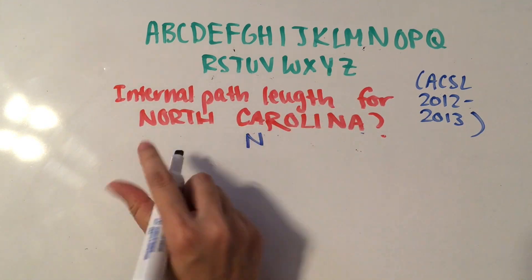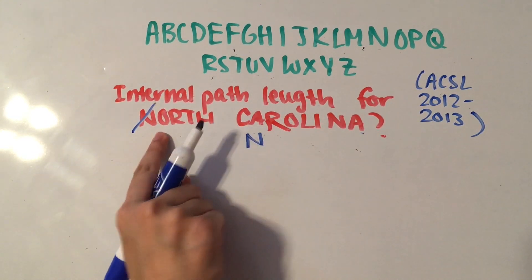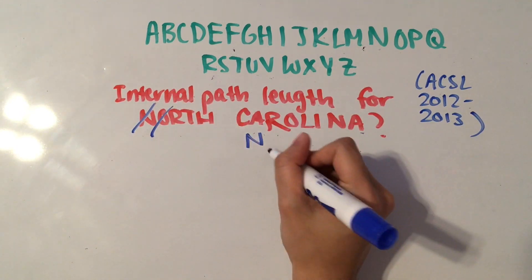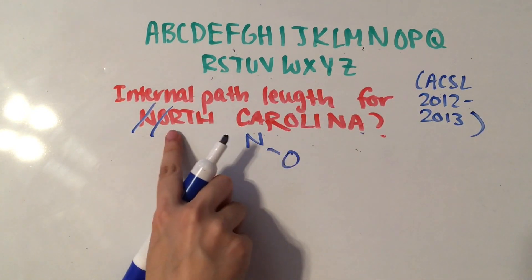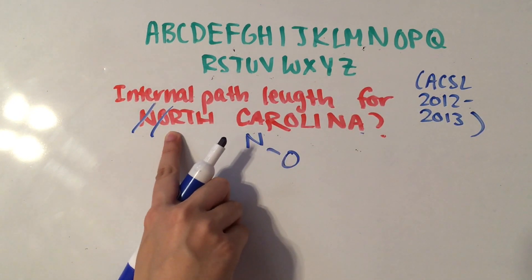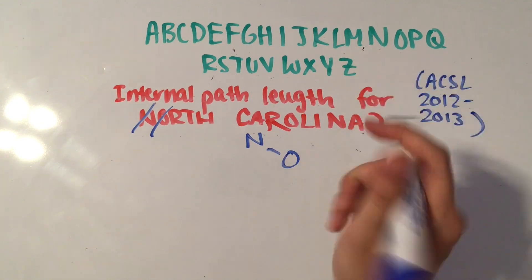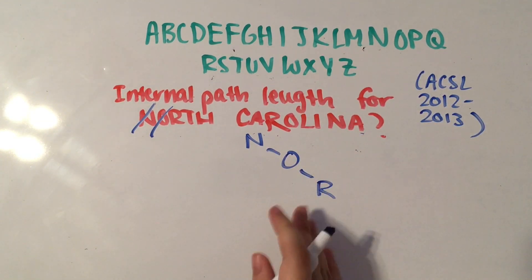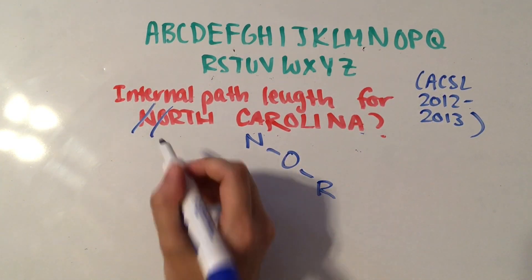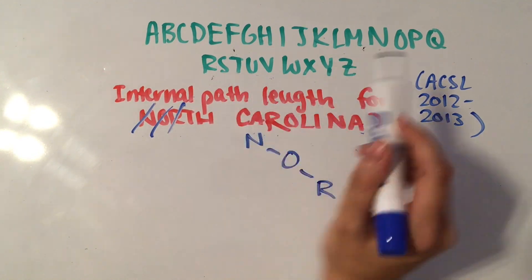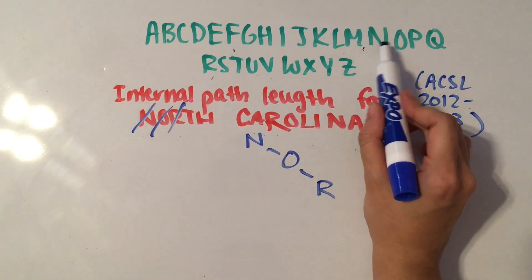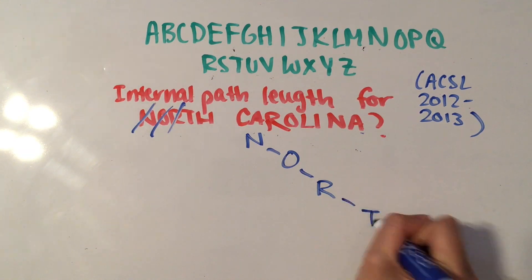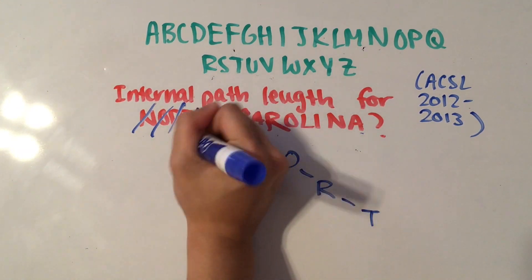We're starting off with N, and then our next letter is O which comes right after N, so we're going to draw a right branch. Then R comes after both N and O, so we make another branch to the right. Then we have T which comes after N, O, and R, so that's going to be another branch to the right.